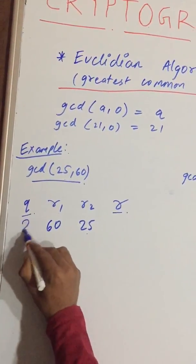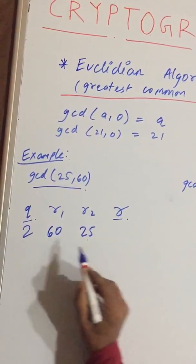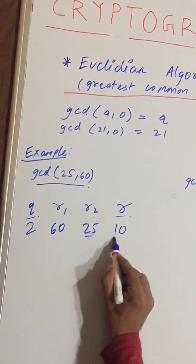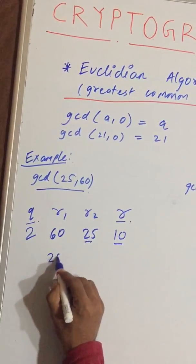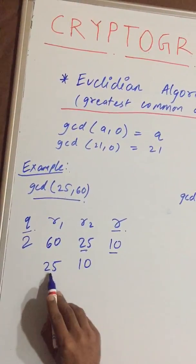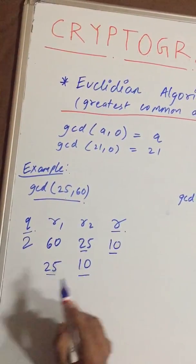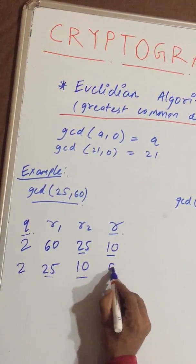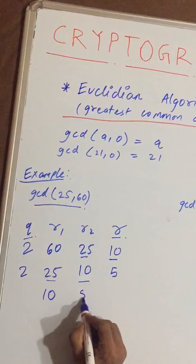So 25 times 2 is 50, and 60 minus 50 gives remainder 10. Now shift both terms: R1 becomes 25 and R2 becomes 10. Again, 10 times 2 equals 20, and the remainder is 5.